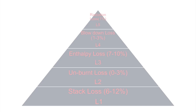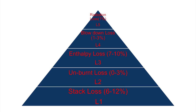We have five to six different types of losses that happen in a boiler. These losses are: number one, the stack loss; then you have the unburnt loss; you have enthalpy loss; blowdown loss; and radiation loss.